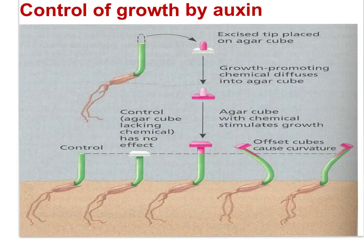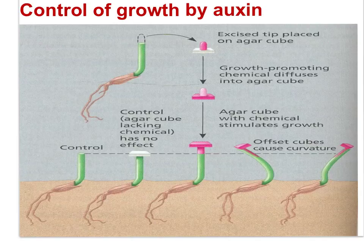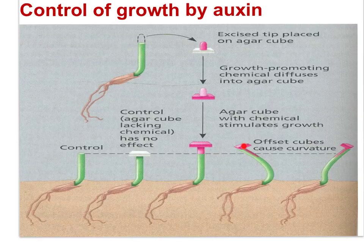A set of clever experiments investigated the effects of auxin. Auxin is synthesized in the apical meristem — the shoot tip. The tip of a plant was cut, excised, and placed on an agar cube, and the auxin diffused into the agar cube. The tip was then discarded while the agar cube was placed on a stem that had no tip. There was no light in this experiment. Auxin caused the stem to grow. When the agar cube was offset, the stem curved according to the position of the cube — all without light.